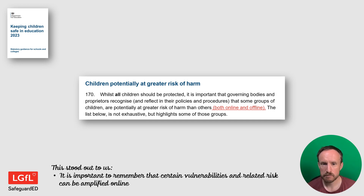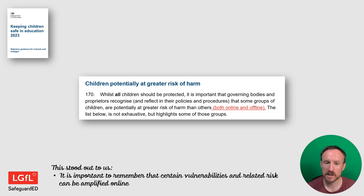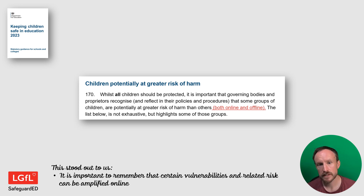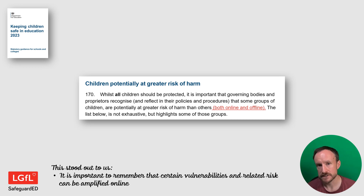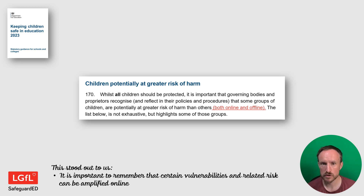Another relatively minor change is the addition of 'so-called' before 'honour-based abuse'. That's really key in terms of framing how we think about safeguarding issues. We can't remove the term because it's still in legislation and referred to in other guidance, but it is helpful to always consider that this form of abuse has nothing to do with true honour. Also, both 'online and offline' has been added in various new places — harm occurs online and offline in all areas throughout the document. Certain vulnerabilities can be amplified in the online space, and it's really key to always remember online elements when talking about children at greater risk of harm.